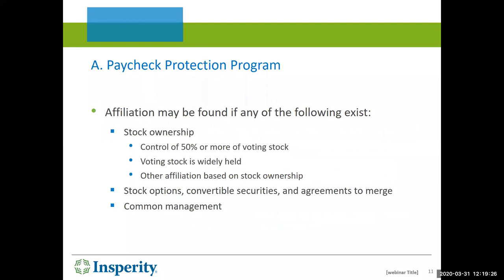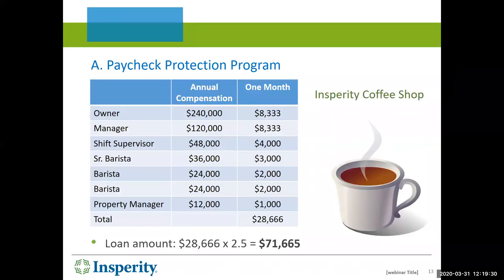Let's go to a specific example — the Insperity Coffee Shop, which has an owner and six employees. On this chart we've listed the annual compensation of each individual and divided it by 12 to figure out monthly pay. For this company, their total one month's compensation adds up to $28,666. Once you have that amount, you multiply it times 2.5, and the resulting amount of $71,665 is the amount that the Insperity Coffee Shop could apply for and receive under the Paycheck Protection Program.